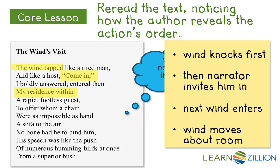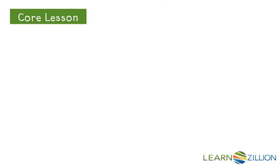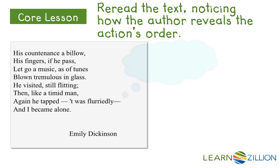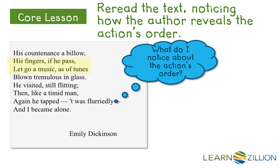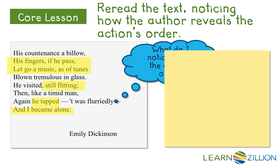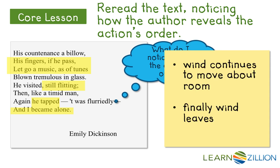First there's a knock, he comes in once she invites him, and it kind of moves along in a linear sequence. Continuing with our first step and looking at the second half of the poem — I'm highlighting where I see an event. The wind continues to move around the room, and then finally he leaves. That's the sequential linear order to this poem — one thing happens and then the next. Finally, the narrator is alone.